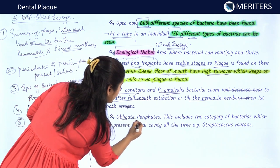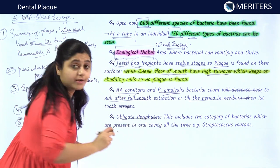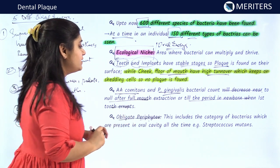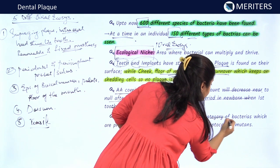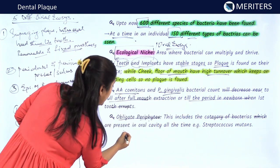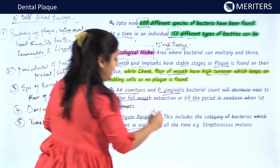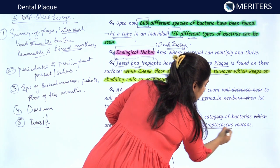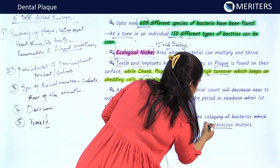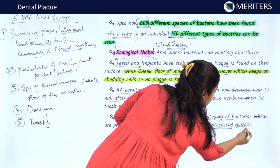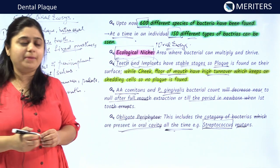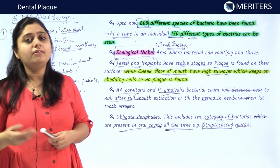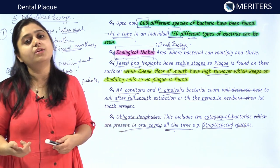Obligate periphytes are microorganisms which develop in the periodontium. Obligate periphytes are the category of bacteria which are present in the oral cavity at all times, and these bacteria are mostly streptococci. The most common example is Streptococcus mutans, which is an obligate periphyte found in the oral cavity whether in a young child or an adult, whether in a patient with periodontitis or without.